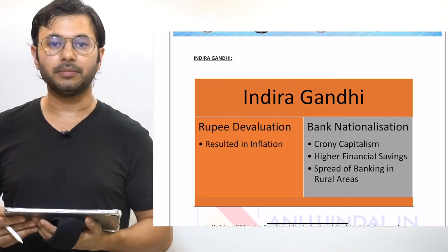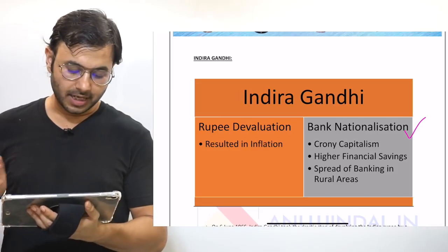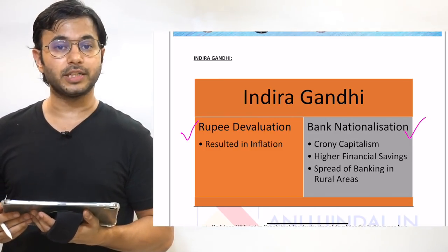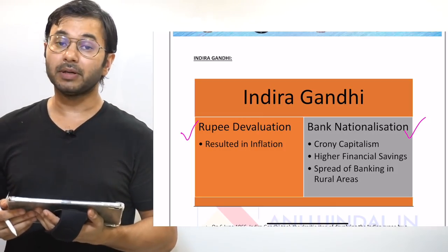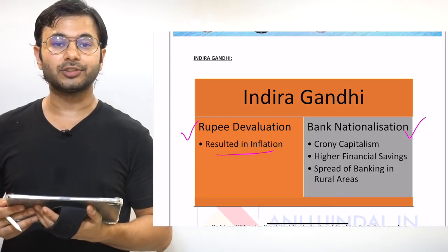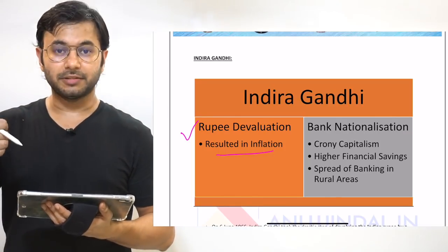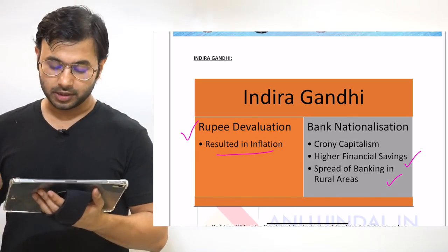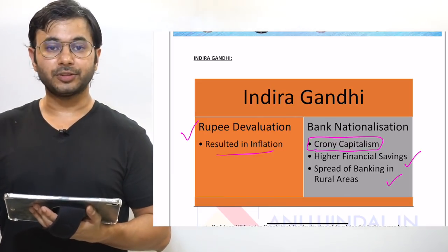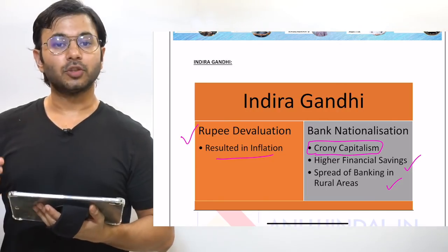After Lal Bahadur Shastri's demise, Indira Gandhi became Prime Minister. She took two major steps: bank nationalization and rupee devaluation. The purpose of rupee devaluation was to expand exports, since a devalued rupee makes exports cheaper and imports costlier. But this did not happen because industrialization — specifically in consumer goods — had not occurred, and rupee devaluation resulted in inflation. Bank nationalization was meant to increase financial savings and spread banking to rural areas, but it came with the problem of crony capitalism, which was partially rolled back in 1991.